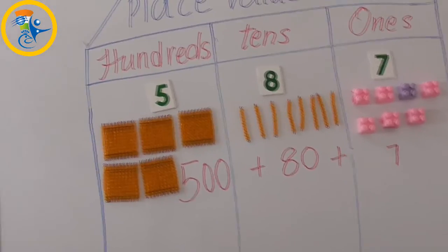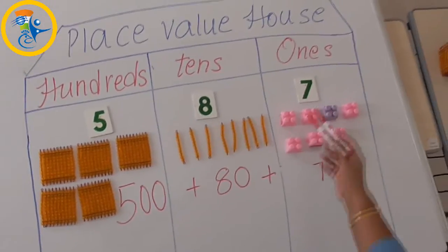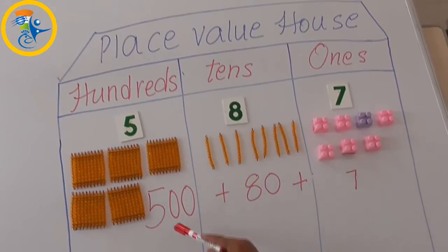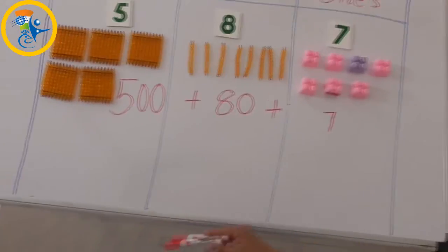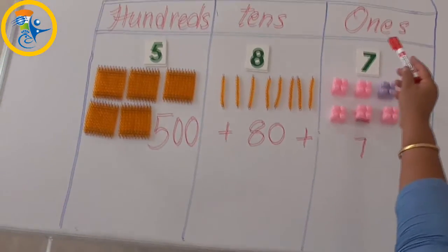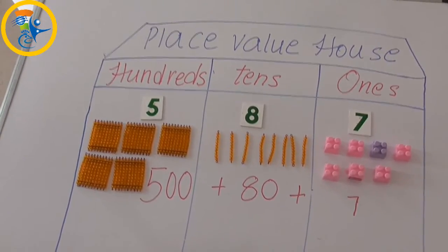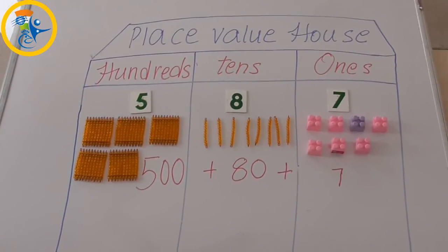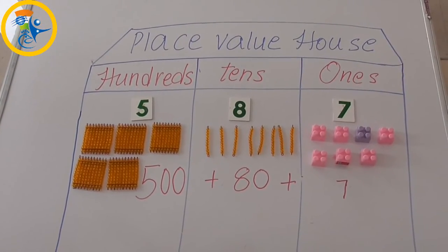So the expanded form of 587 is: 5 at hundreds is 500, 8 at tens is 80, and 7 at ones is 7. I hope kids you understood this place value. Thank you.